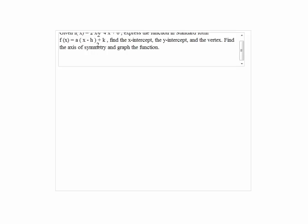Given f(x) = 2x² + 4x + 6, express the function in standard form f(x) = a(x - h)² + k. Find the x-intercept, y-intercept, and the vertex. Find the axis of symmetry and graph the function.